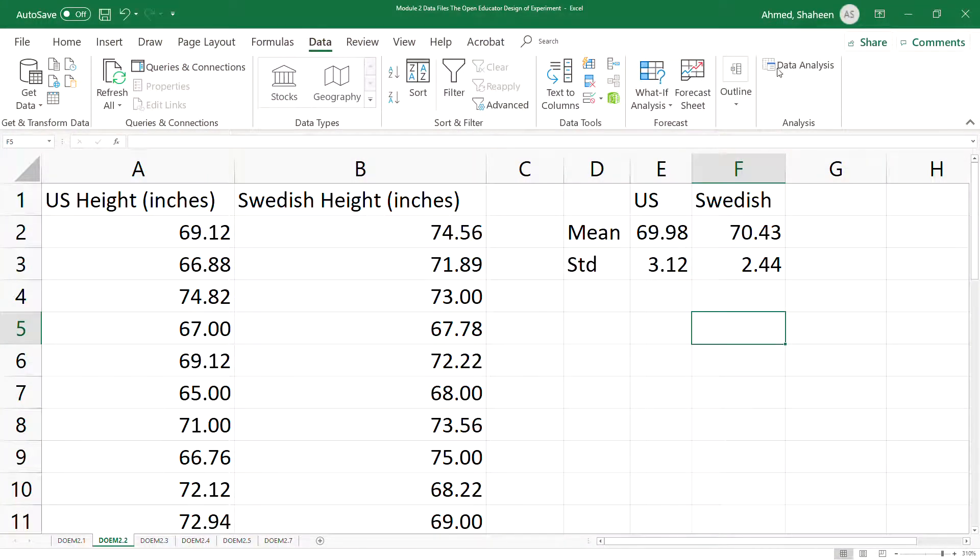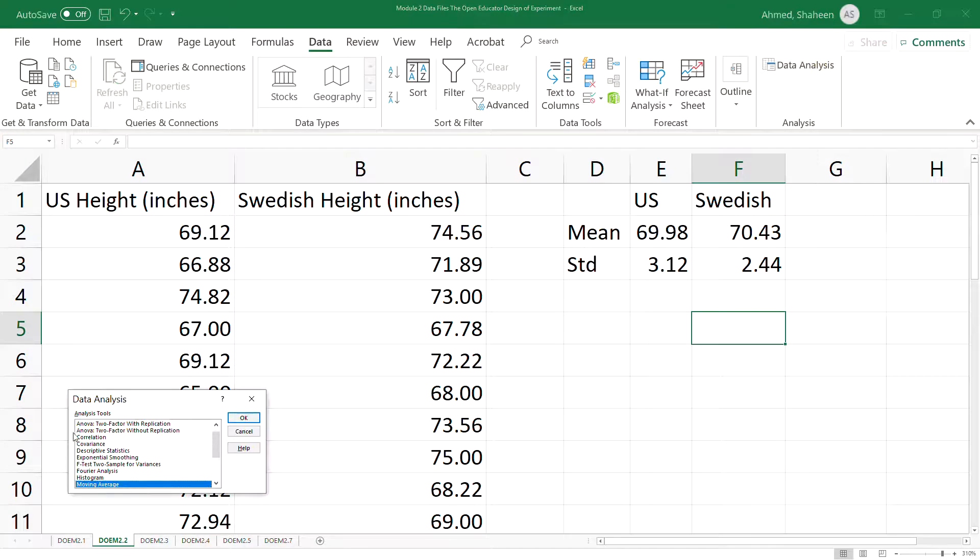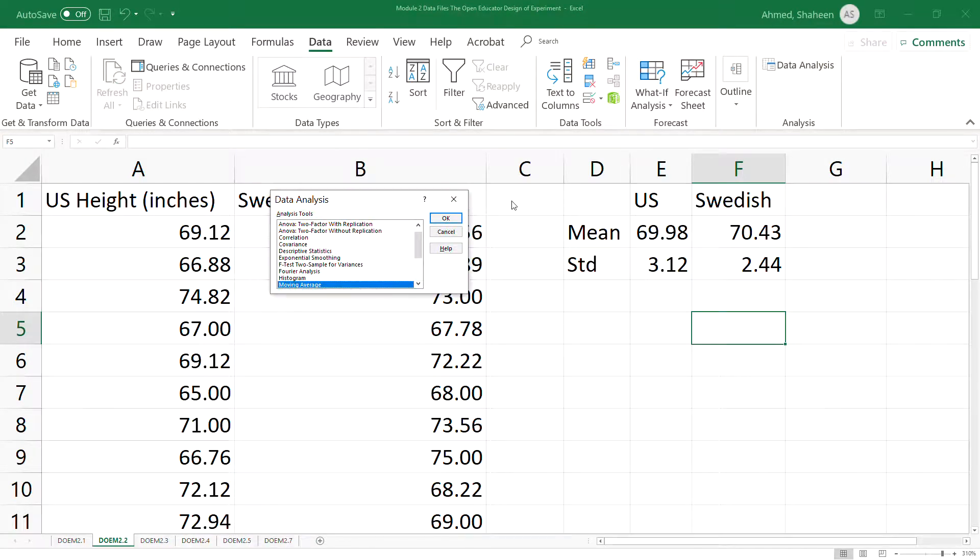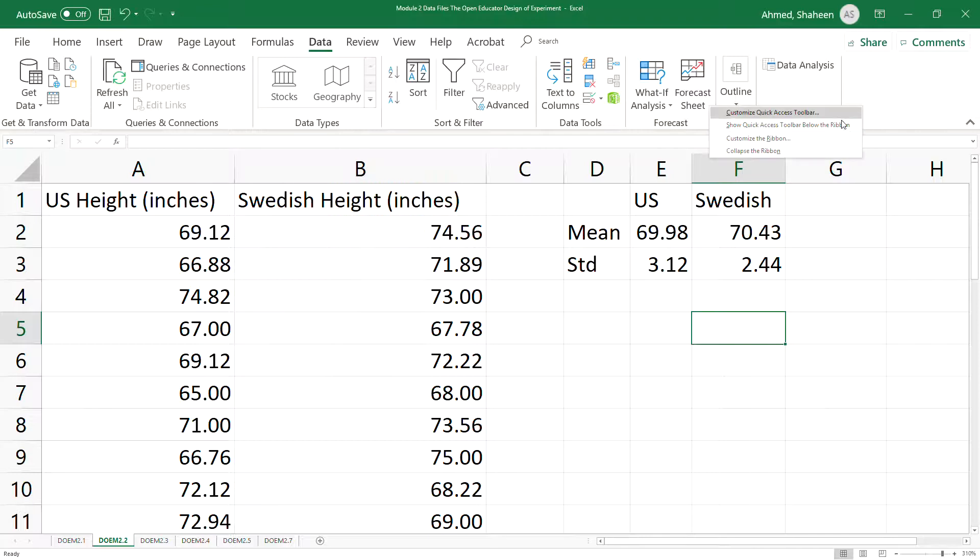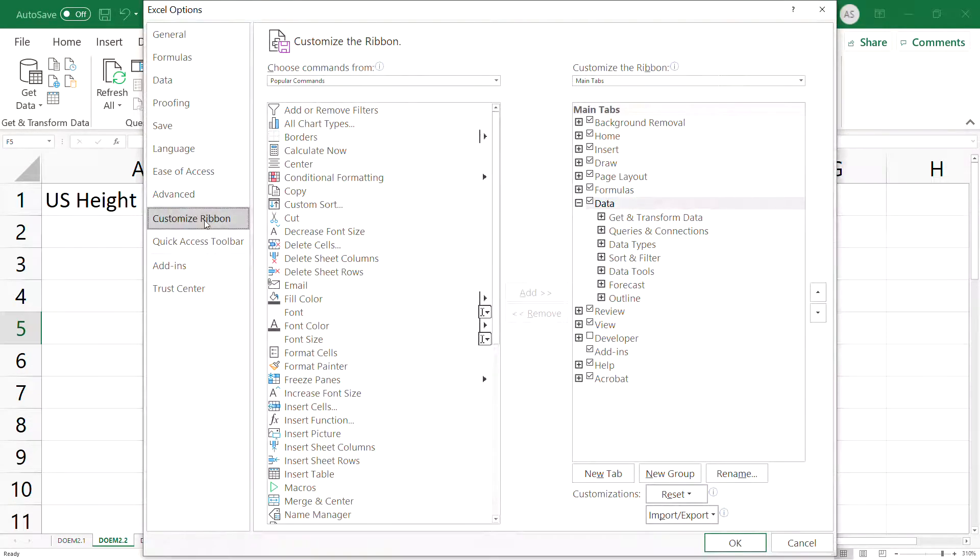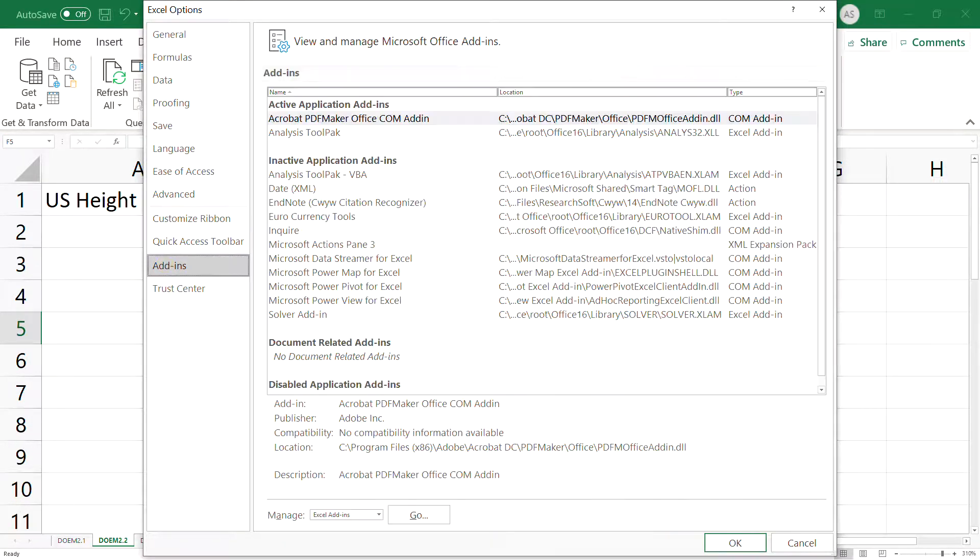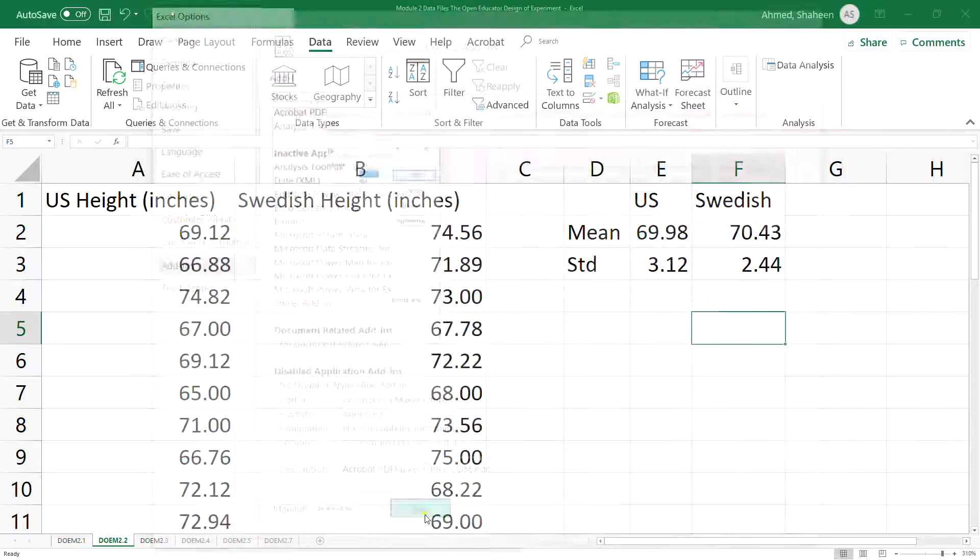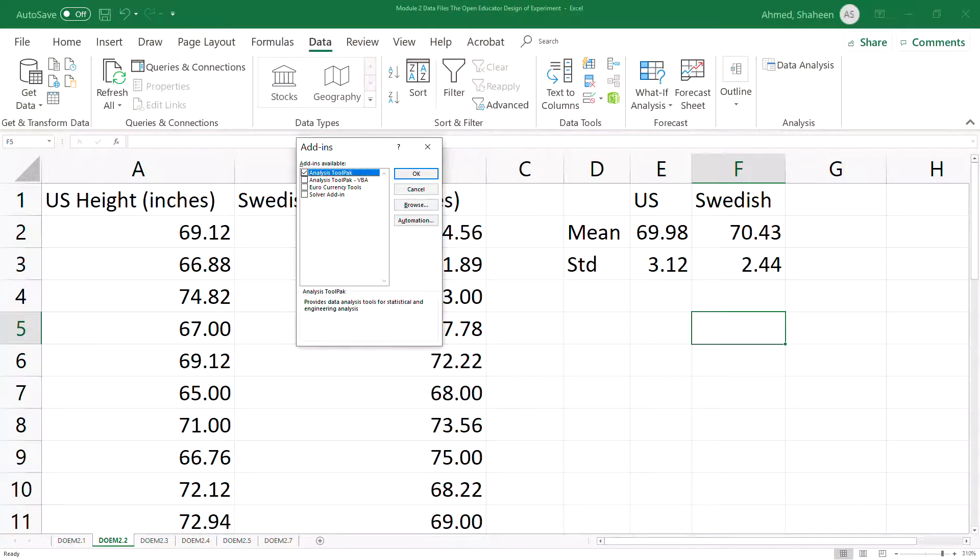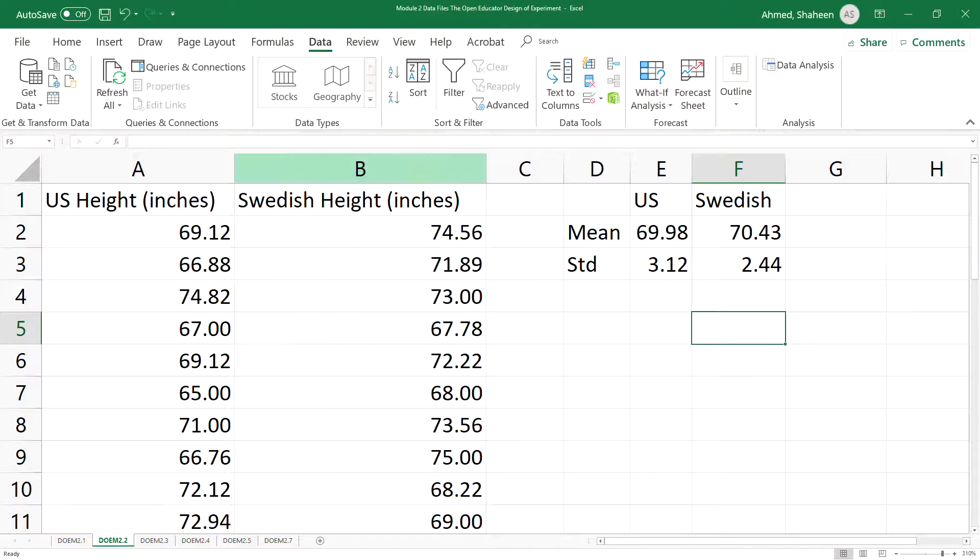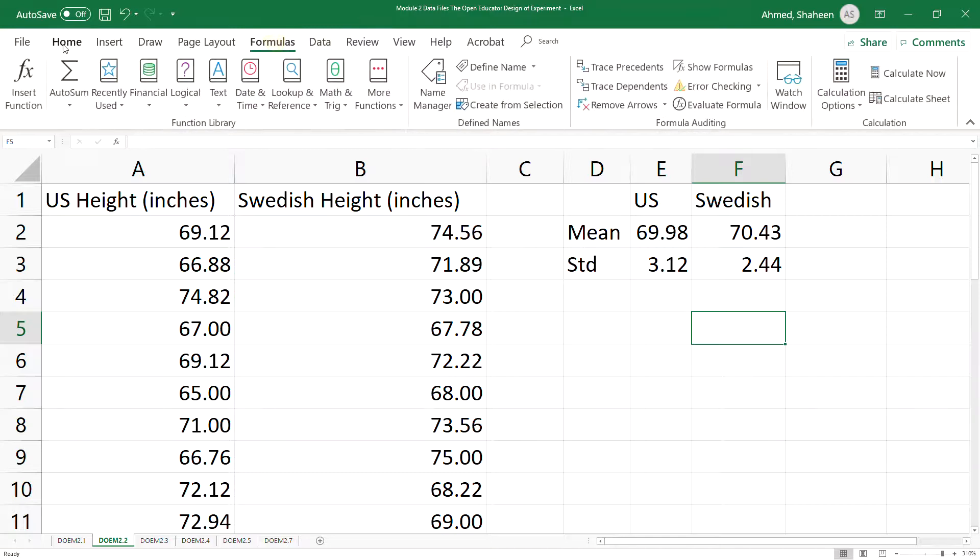To analyze the data, go to the Data tab and click on Data Analysis. If you don't see Data Analysis, right-click on the ribbon, select Customize Ribbon, then go to Add-ins and click Excel Add-ins. If the Analysis ToolPak box is not selected, click on it to select it, hit OK, and then you will see Data Analysis appear.